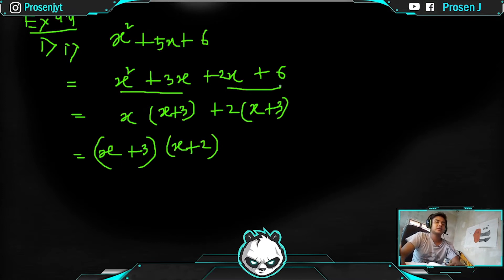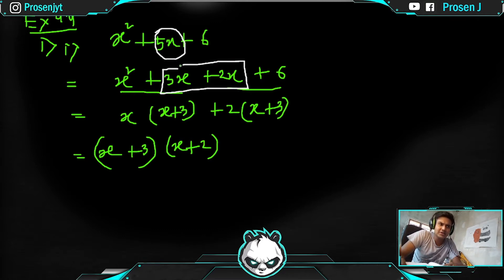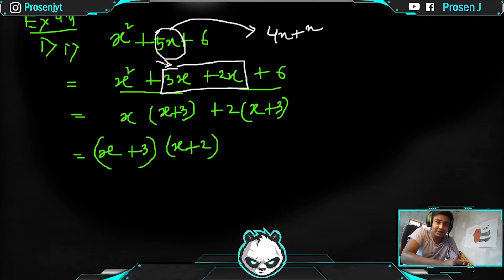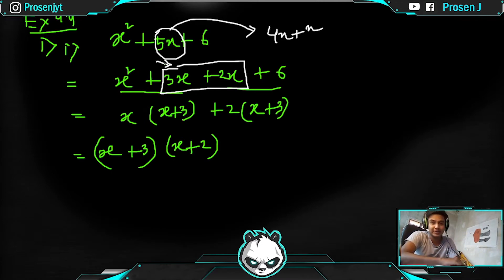But the big question is: how do we know that 5x should be broken into 3x + 2x? We could also break it as 4x + x — so why didn't we do that? Why are we using 3x + 2x? This decision process is what the Middle Terms Method teaches us.